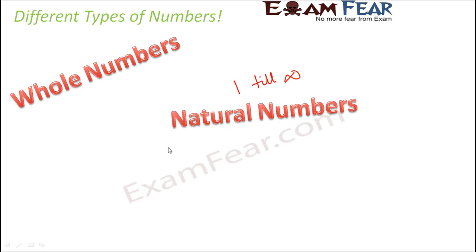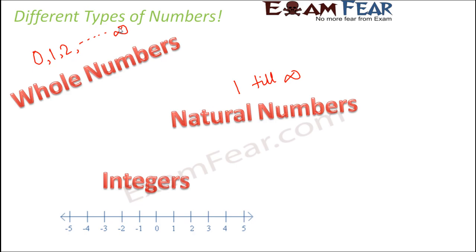The next type are whole numbers. Whole numbers include all natural numbers plus zero. Zero is the number that exists before one, so starting from zero: 0, 1, 2, 3, 4, 5, and so on till infinity — that is a whole number. So whole numbers include all the natural numbers plus zero.